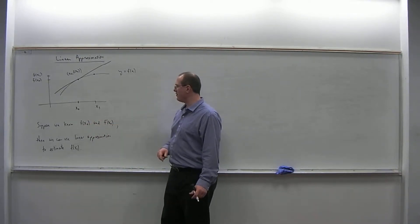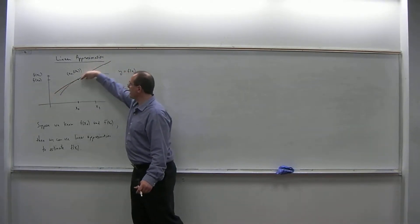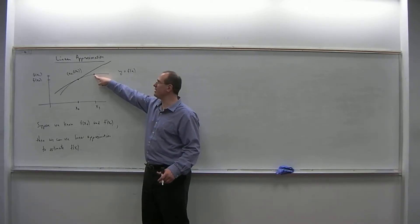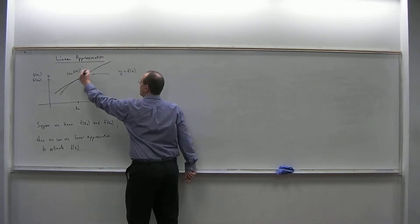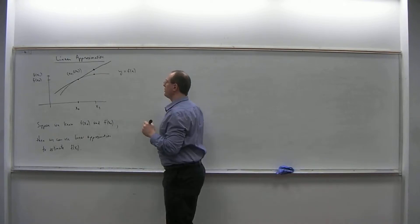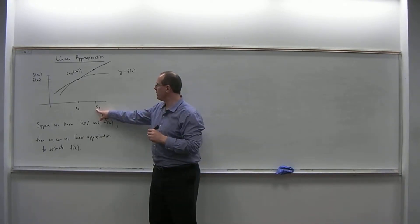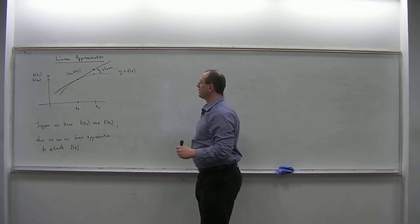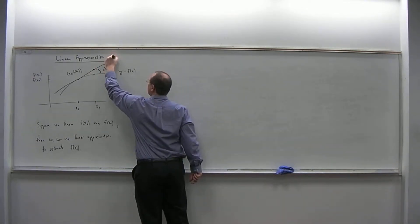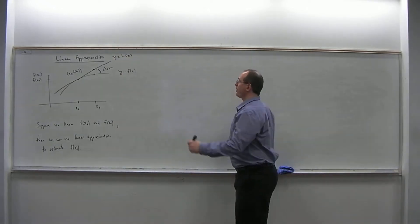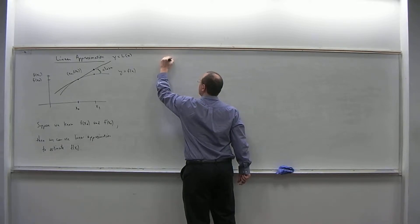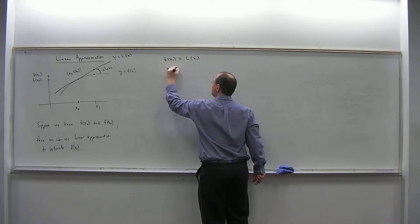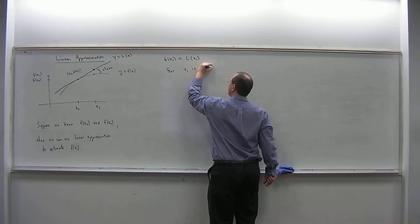What I know is f of x0 and f prime of x0, and with that information I can draw the tangent line. What I want to approximate is the height of this dot, which is f of x1. Using this tangent line, if I draw a dot on the tangent line corresponding to x-coordinate x1, then these two dots are close together. If I give the tangent line the name L of x, then f of x1 is approximately equal to L of x1, under the assumption that x1 is near x0.